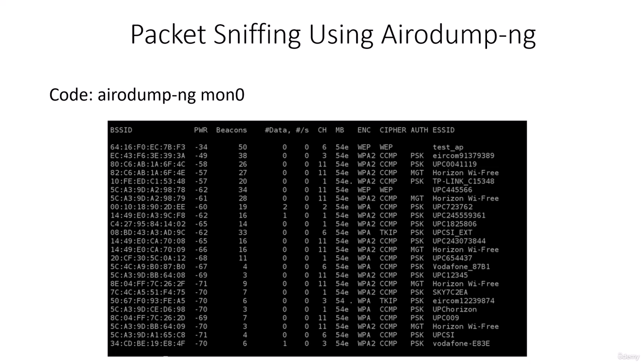An open network will show 'open' when no encryption is set. For the cipher column: for WEP the cipher is WEP, and for WPA2 it can be CCMP. For WPA it can also be TKIP. We'll talk about this more when we get into WPA cracking. The authentication column shows the type of authentication required by the access point — it can be PSK (pre-shared key) or MGT, which we'll also cover during WPA cracking.